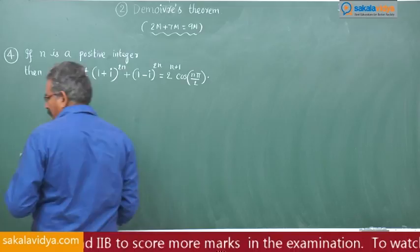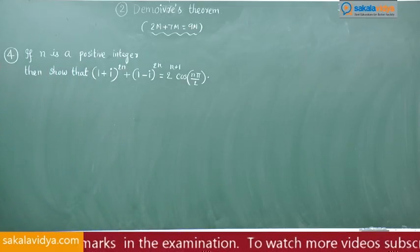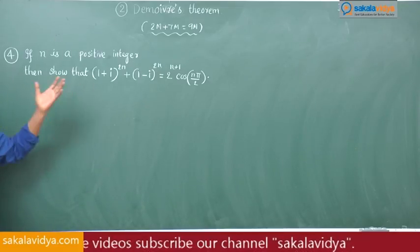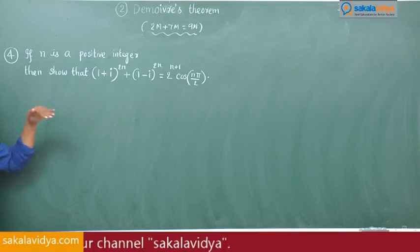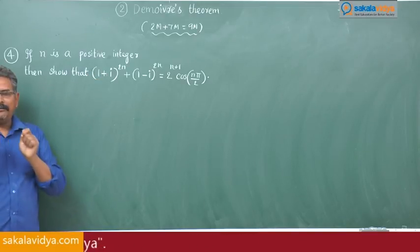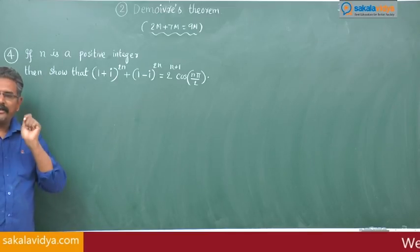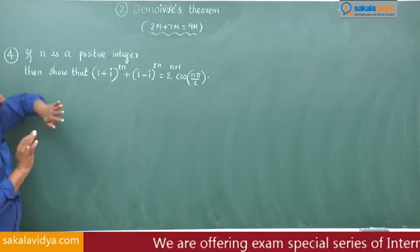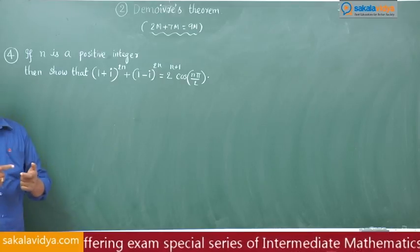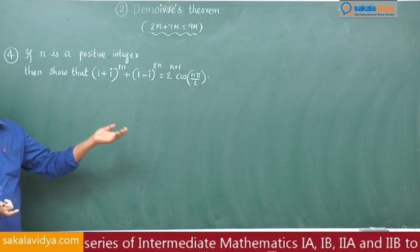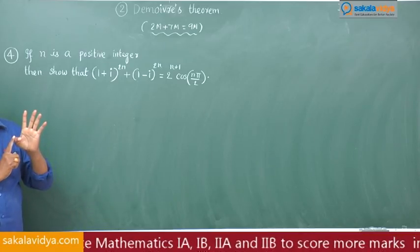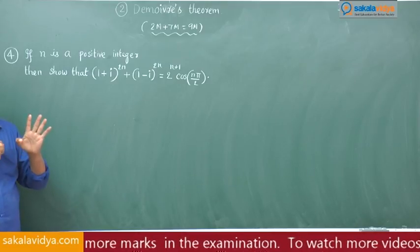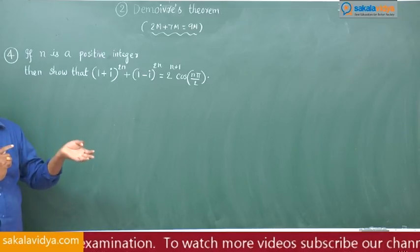This is a very important problem from an examination point of view. To solve these kinds of problems, the first step is to write the modulus-amplitude form, or polar form, or trigonometric form of 1 plus i and 1 minus i. Then substitute and apply de Moivre's theorem to simplify.